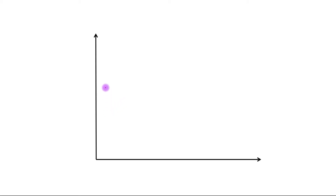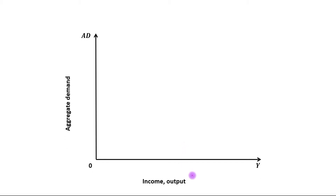Here you can see two axes: a vertical axis and a horizontal axis. On the horizontal axis we have taken income or output, and on the vertical axis we have taken aggregate demand.